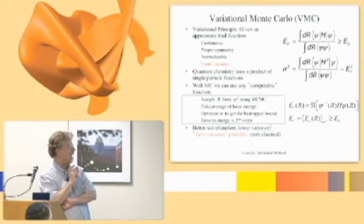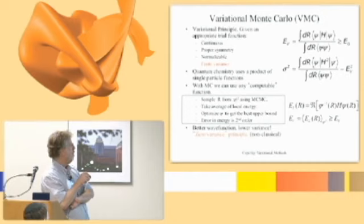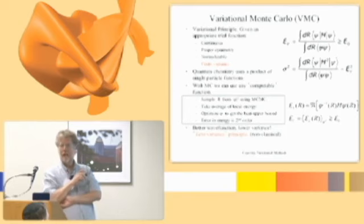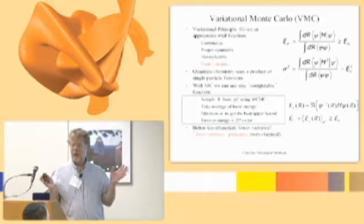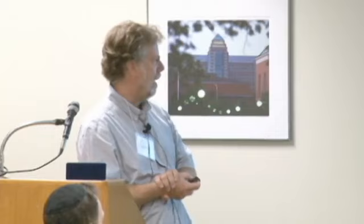Jeremy McMinnis is going to talk about optimization on Thursday — I'm not going to do that today. The advantage of Monte Carlo is you can use any computable function for psi. You're not limited to the simple independent particle picture. If you think a certain type of correlation should be in the wave function, you just throw it in. The only requirement is that you can calculate it and optimize the parameters.